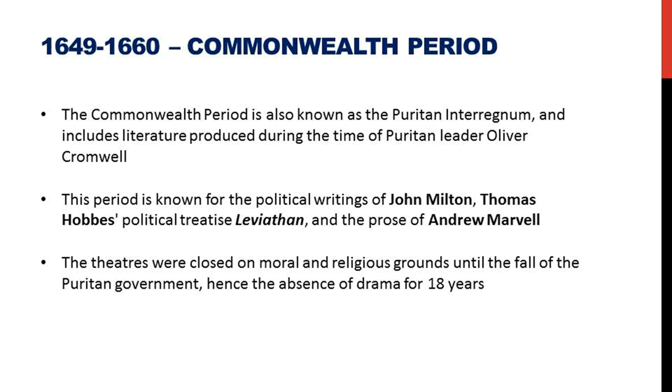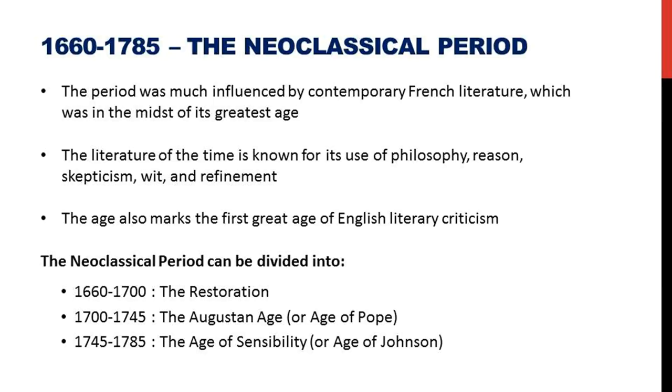Thomas Hobbes was also a popular figure, as was the prose writing of Andrew Marvell. We then move to the neoclassical period, spanning 1660 to 1785, influenced by contemporary French literature. The literature of the time was known for its philosophy, reason, skepticism, wit and refinement. The age is also important for the rise of English literary criticism. It is further divided into three sub-periods: the Restoration period, the Augustan age, and the Age of Sensibility or the Age of Johnson.